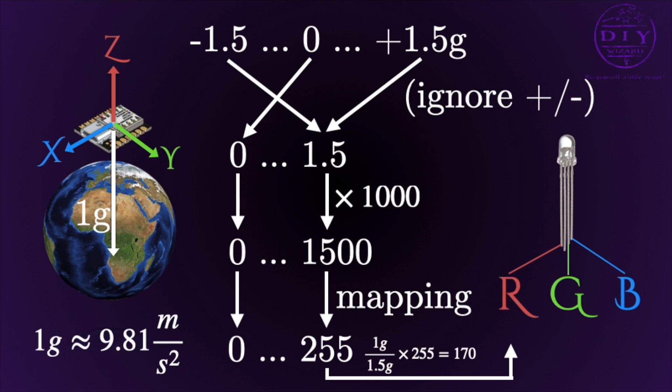And what it does in the end is it delivers a percentage from 1g of 1.5g times 255, which is about 170. So the red LED gets a value of 170, the other two 0, so the LED lights up red.